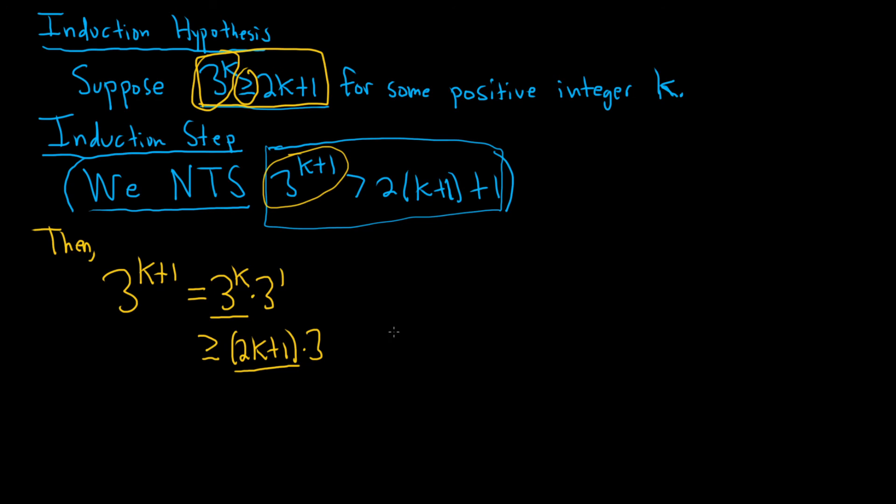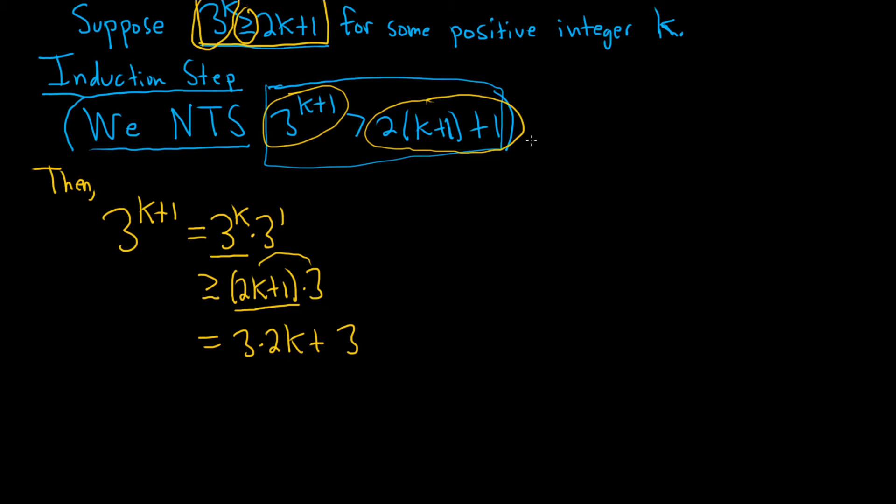And what are we trying to show? We're trying to show this. We're trying to show that 2 times k plus 1 plus 1 is on the right-hand side. So what's this equal to? This is 3 times 2k plus 3, just distributing the 3. So we don't need this many 2ks. We only need 2k plus 2 plus 1. We only need 2k plus 3. See what I did there? I just multiplied this out on the side to help myself think. So we only need this. So we can easily drop the 3 and say this is greater than 2k plus 3.